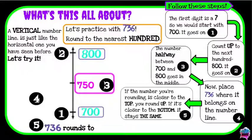Now I'm going to place 736 on the number line. 736 is more than 700 but it's less than 750, so it's going to come down here.